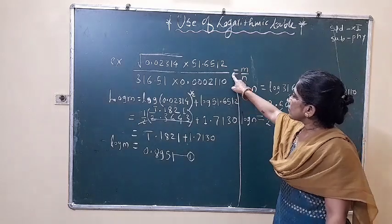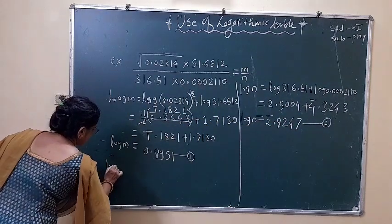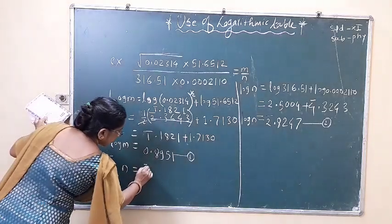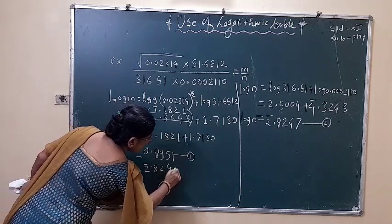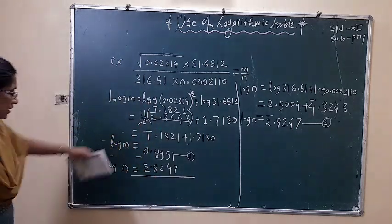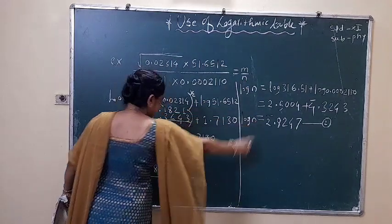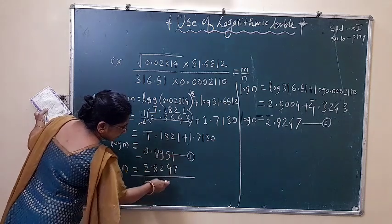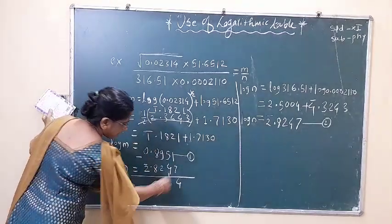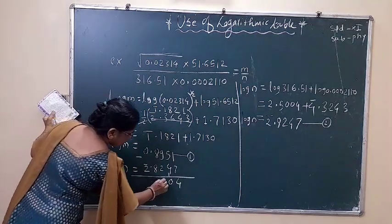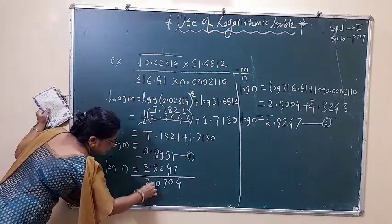By applying log of numerator minus log of denominator: log n divided by d equals log n minus log d. Take subtraction. Bar 2: 8, 2, 4, 7. That is log of denominator. Then log of numerator minus log of denominator: 11 minus 7 is 4, 5 minus 5 is 0, 8 minus 8 is 0, and it becomes plus 4.